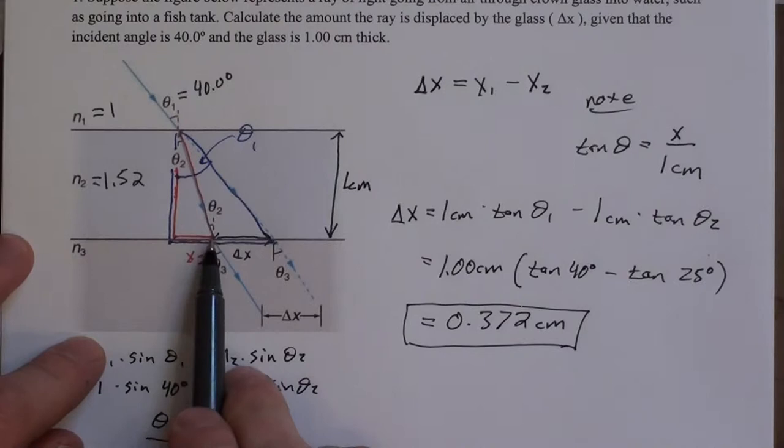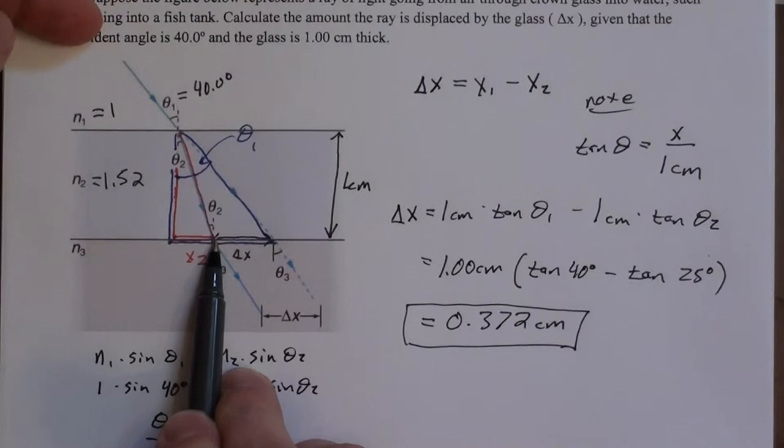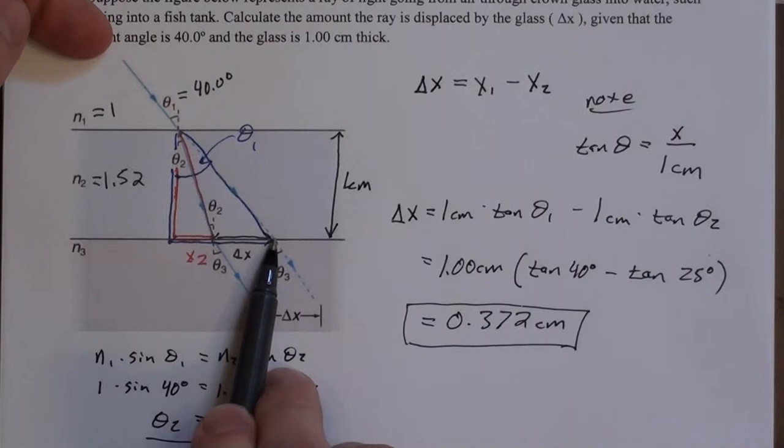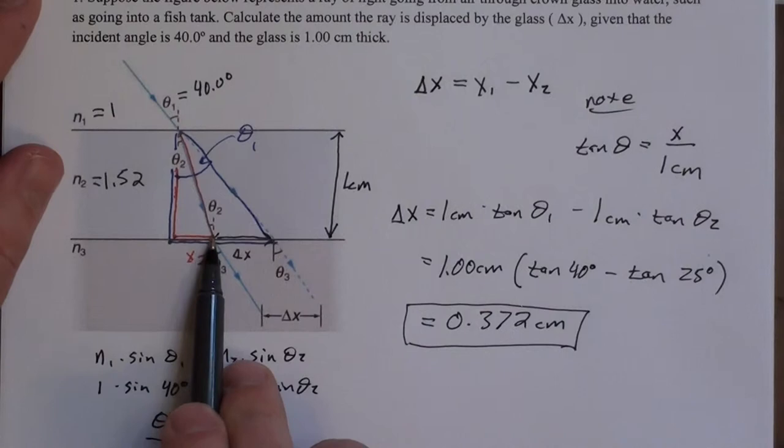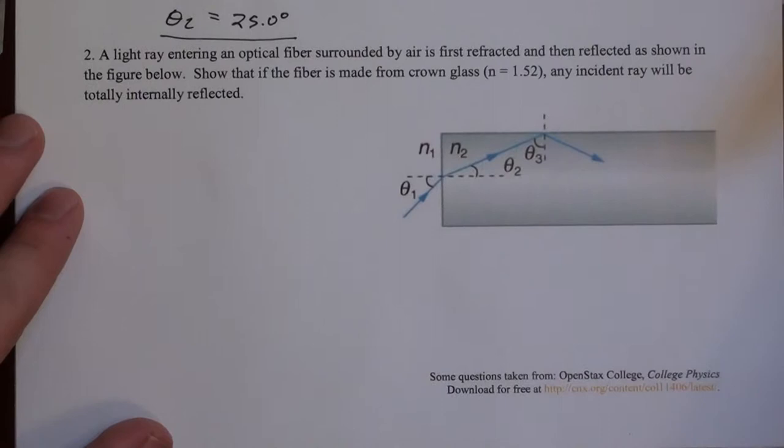So what that means is an object originally located right here would be observed by someone from the outside to appear to be at this point. Because the observer doesn't take this bending, this light refraction into account. An observer thinks that the object is here when in reality it's back 0.37 centimeters.